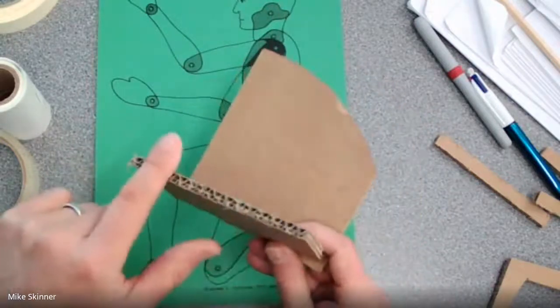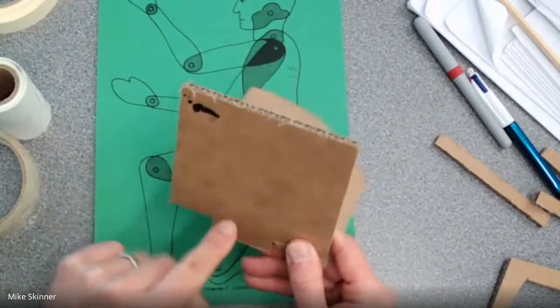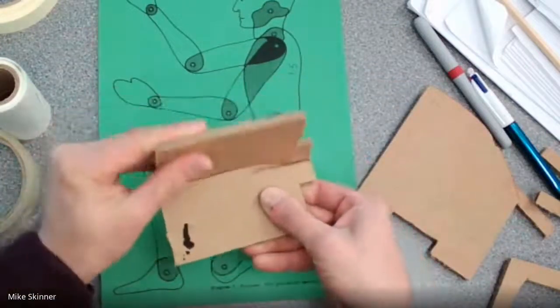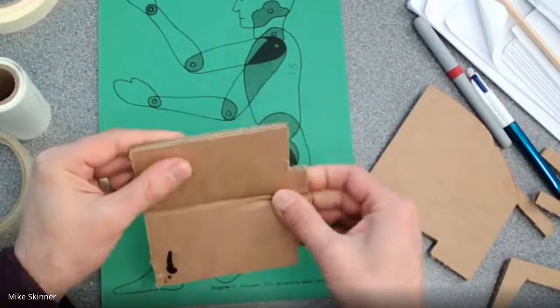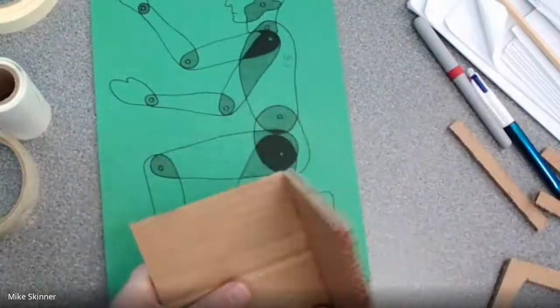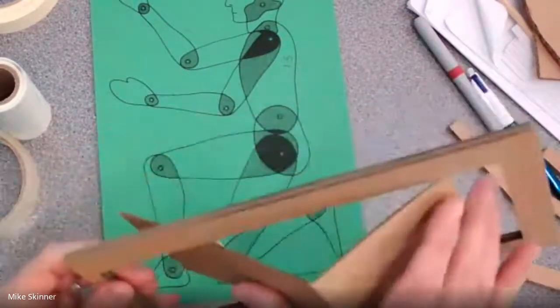Make sure you think about the direction of these zigzags. This material is going to be very strong in this direction where the zigzags are running top to bottom. It's going to be less strong in this area where it can actually crease quite easily. You might choose to use that property of your material.